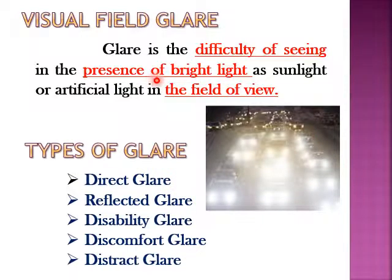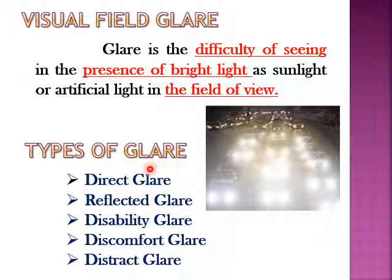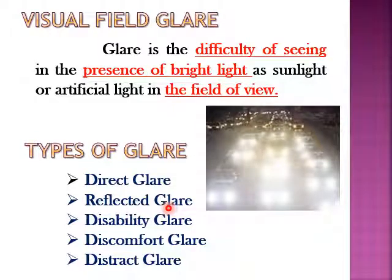Based on the angle of incident, reflected, or scattered light beam, glare is of five types: direct glare, reflected glare, disability glare, discomfort glare, and distract glare.